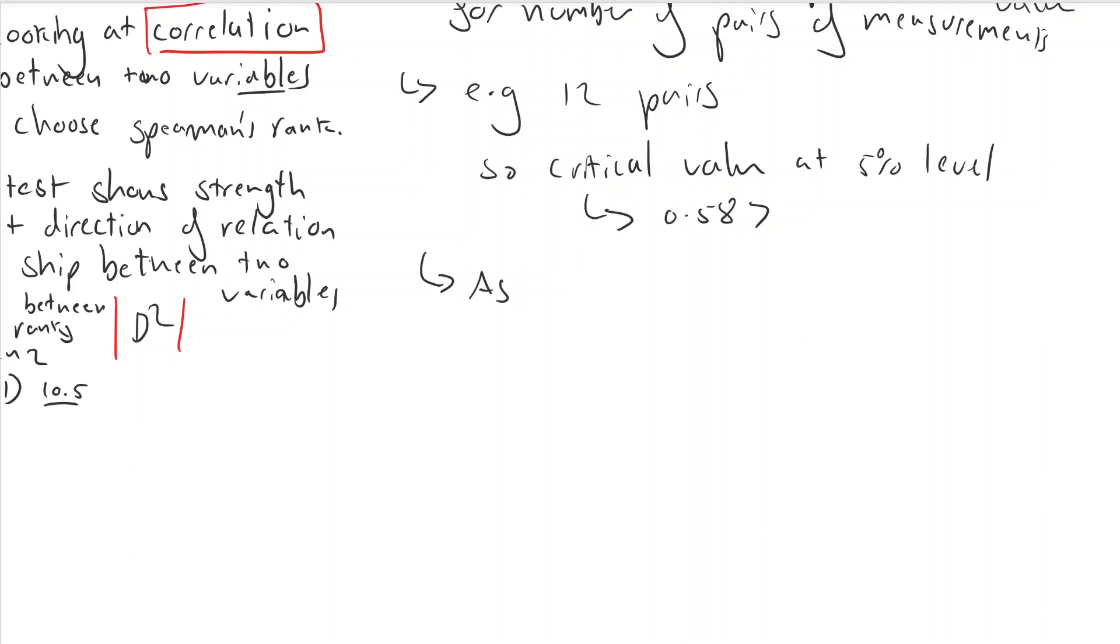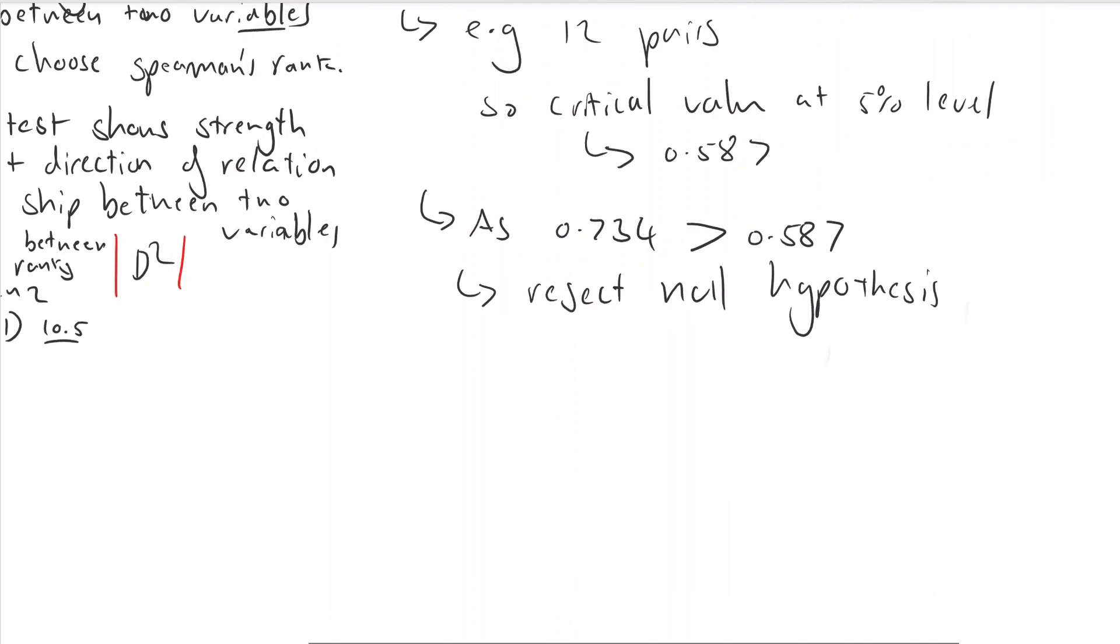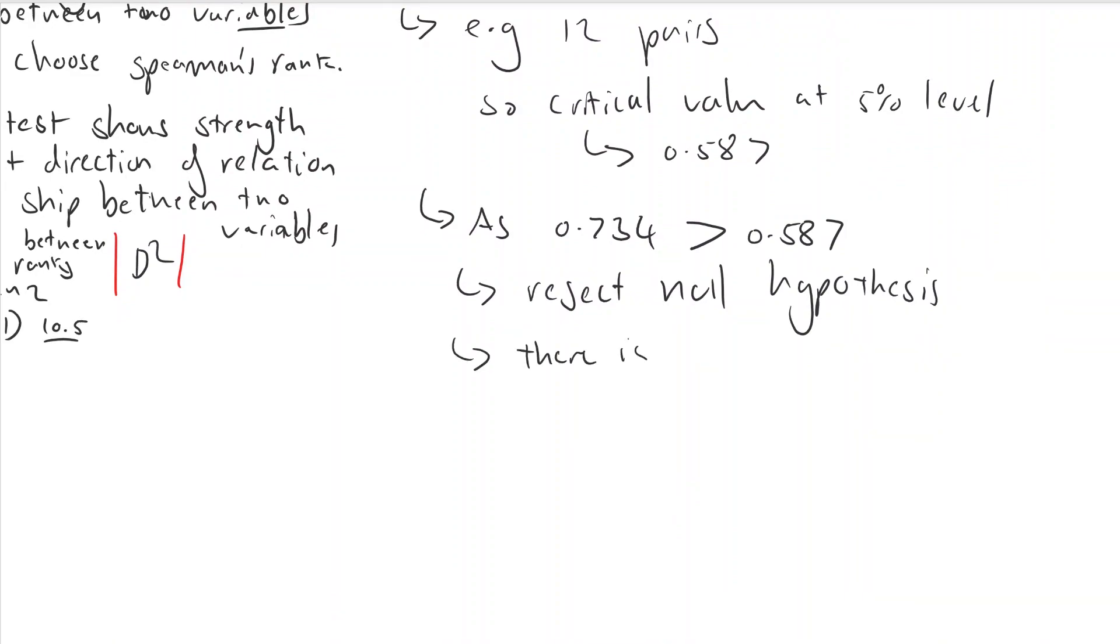Now our value calculated of the correlation constant is bigger or greater than the critical value at the five percent level. So we can reject the null hypothesis and say that there is a correlation between wind speed and percentage cover of marram grass.